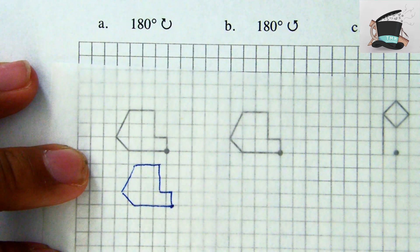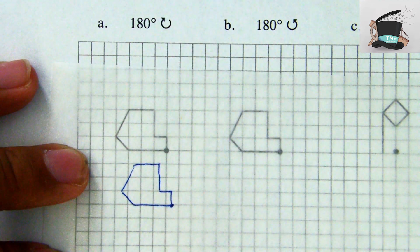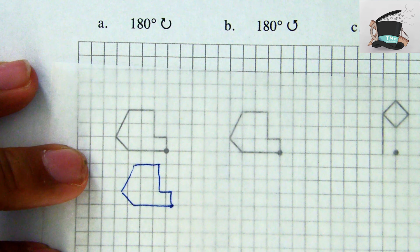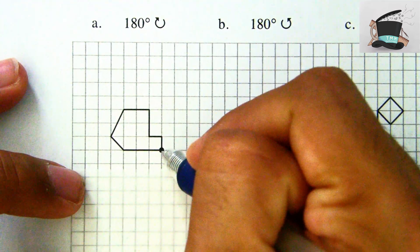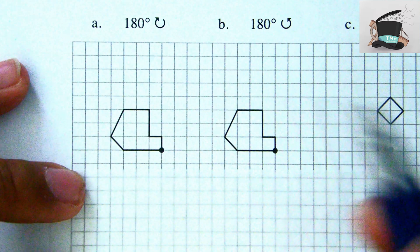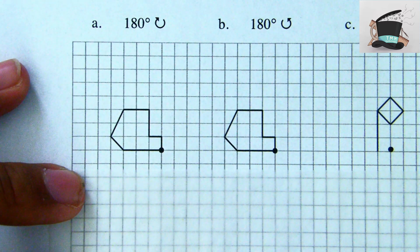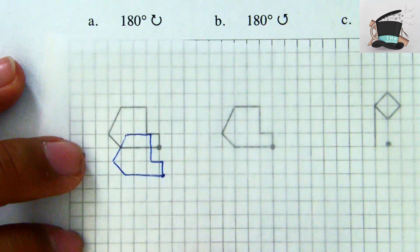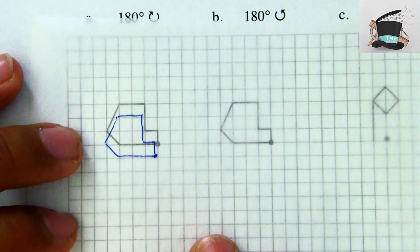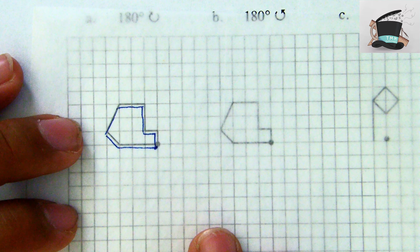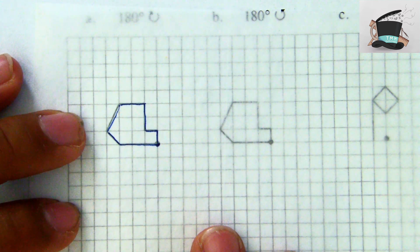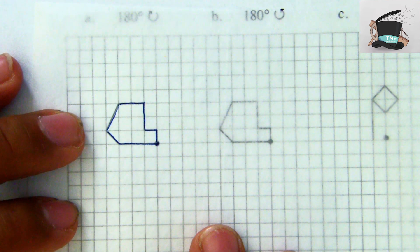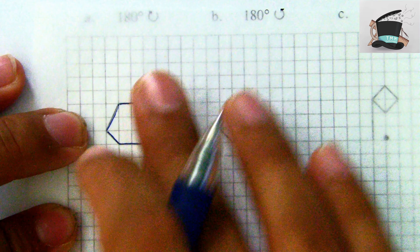Whenever you are rotating an object, a graph, a line, or whatever it is, you're actually rotating around a point. We can see here on our original shape the point that we want to rotate around. I put my tracing paper right exactly over it so I can see them laying on each other.